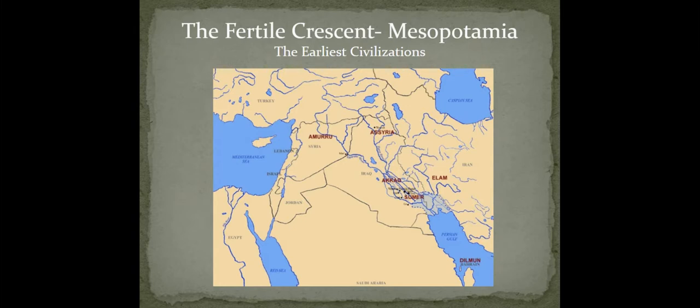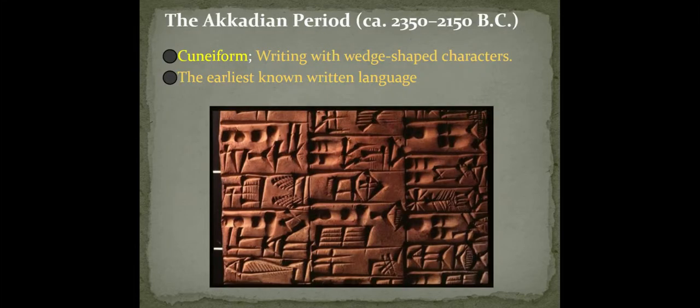Before we go on to Egypt, I did want to mention that some of the earliest civilizations were in Mesopotamia, in this area here in the Middle East. We won't talk about that in detail, but I did want to mention that some of the earliest forms of writing were in the Middle East, and the one you should remember if you can is cuneiform. We'll talk about that at some later date.